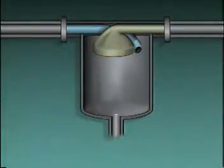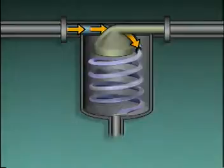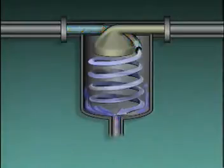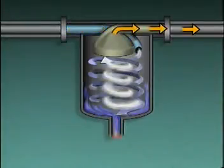As moist gas enters the de-mister, it begins spinning. Because liquids are heavier than gases, centrifugal force causes liquid to separate from the gas and hit the shell. The liquid runs down the shell and out through the liquid outlet. The gas enters the collector and leaves through the gas outlet.